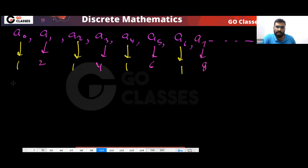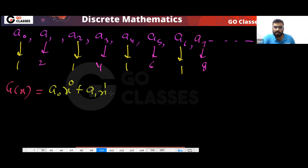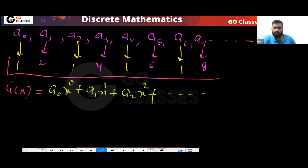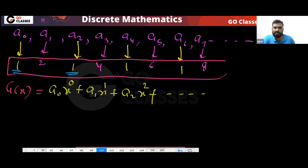Now apply the formula — what will be the generating function? The generating function will be a_0·x^0 + a_1·x^1 + a_2·x^2 and so on. You can notice the sequence. So what will you do to solve this question? Solve them separately.